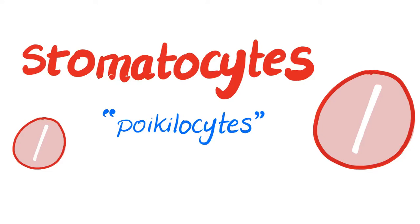Hey guys, it's Medicosis Perfectionalis here. Today we're going to talk about stomatocytes. They are abnormal shaped red blood cells, also known as poikilocytes, because poikilocyte is a term that includes any abnormally shaped red blood cell. One of those abnormal red blood cells are the stomatocytes, and they look like this. The central pallor is not circular — instead it's a slit shape.